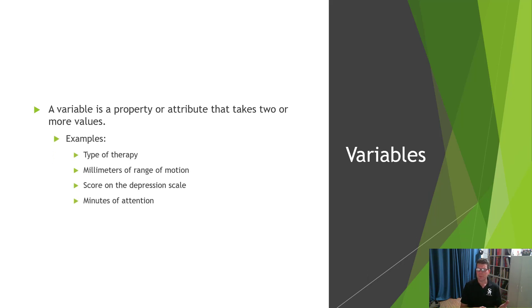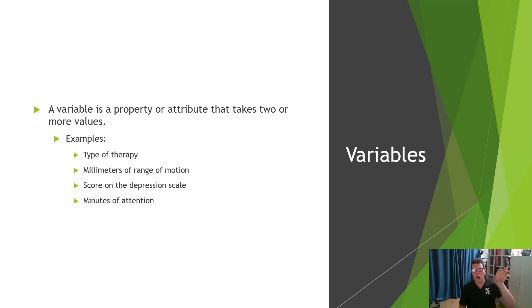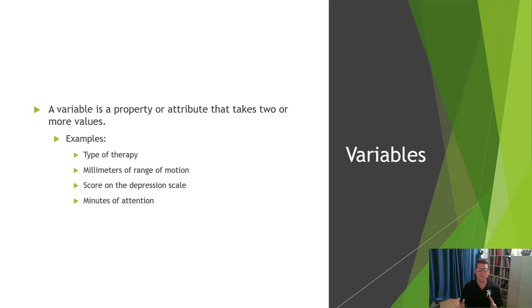Looking at examples from health research: type of therapy is a variable, with values like yoga therapy, skateboard therapy, and no therapy. Millimeters of range of motion is another variable. Scores on a depression scale — 45, 67, 32, 72 — are values the variable takes. We might make interpretations off those scores, but the interpretations are not the variable itself; the score on the depression scale is the variable.